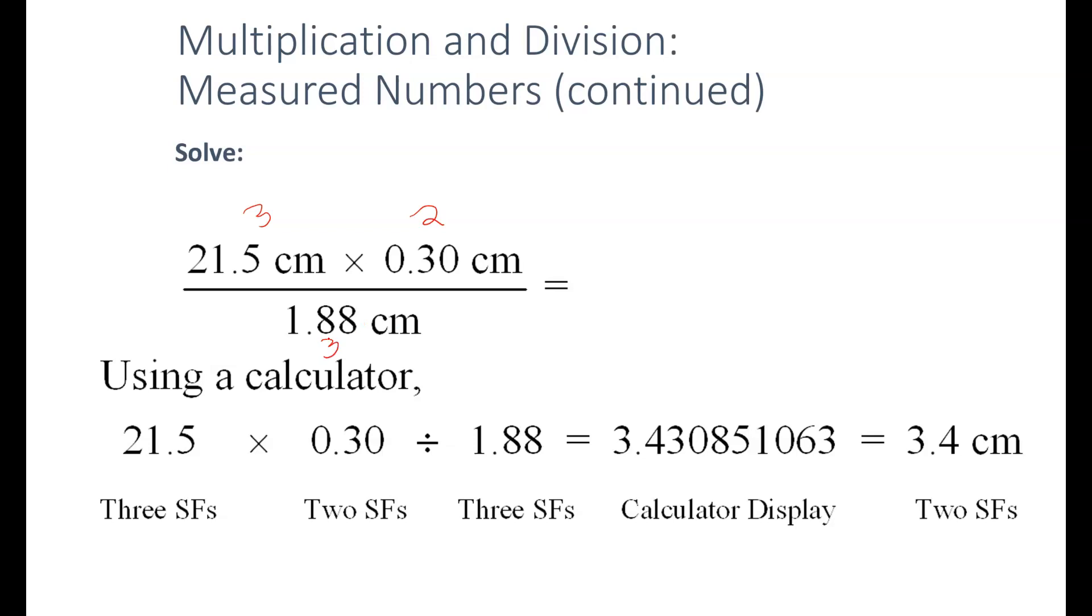So, I need to round to the lowest number of significant figures, which is 2. This long number, my 3, my 4 are my first significant figures. The next value is less than 5, so I'm going to round it to 3.4 centimeters.